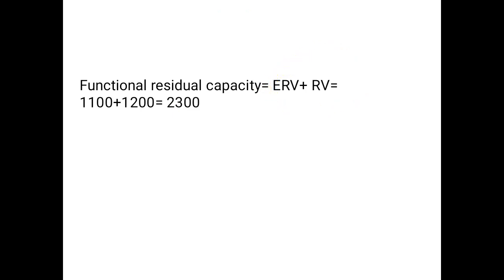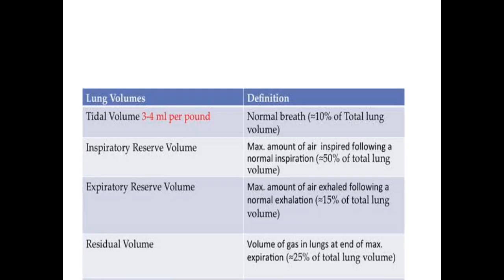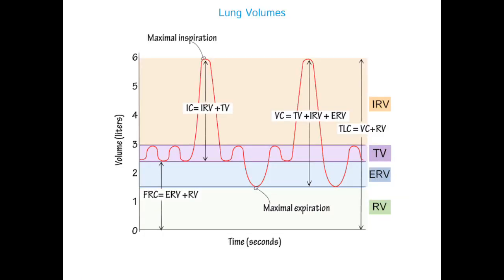Functional residual capacity (FRC) is the volume remaining after a normal quiet expiration — it is the sum of expiratory reserve volume and residual volume. It is called 'functional' and is a capacity because it is a calculated sum of two volumes. Since FRC includes residual volume, and residual volume cannot be measured by spirometer, FRC cannot be measured by spirometer either. Similarly, total lung capacity (TLC) and residual volume itself cannot be calculated by spirometer.